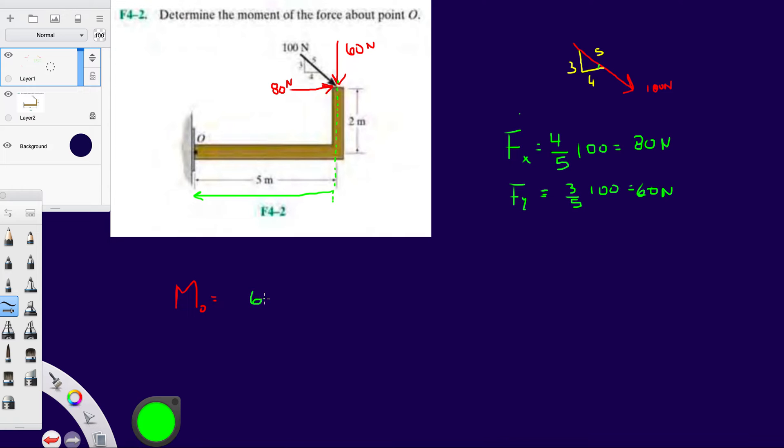And then for the x-direction, the force in the x-direction is going to be 80. And then the line of action for this one—how far do we have to shift it down in order to intersect the pivot point? Well, it's going to have to be 2 meters. So it's going to be 80 times 2. Again, just put a pencil down your paper along this direction and just slide, translate it down until it intersects point O.